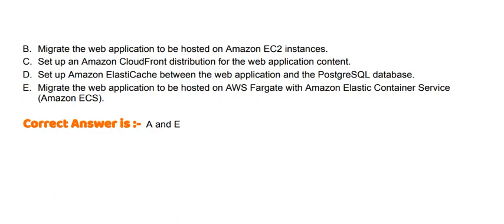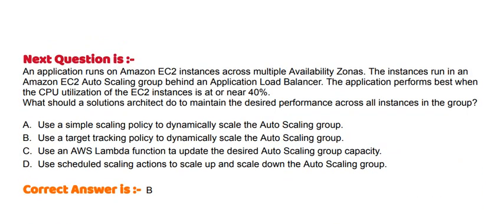Option A: Migrate the PostgreSQL database to Amazon Aurora. Option B: Migrate the web application to be hosted on Amazon EC2 instances. Option C: Set up an Amazon CloudFront distribution for the web application content. Option D: Set up Amazon ElastiCache between the web application and the PostgreSQL database. Option E: Migrate the web application to be hosted on AWS Fargate with Amazon Elastic Container Service. The correct answer is Options A and E.